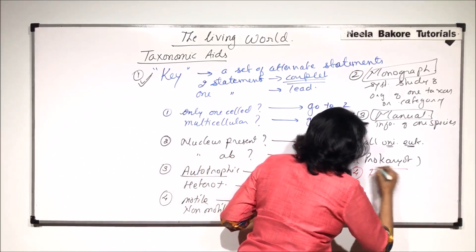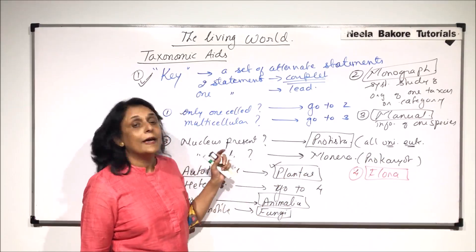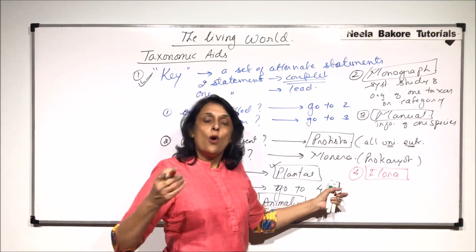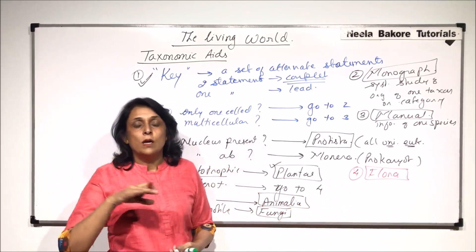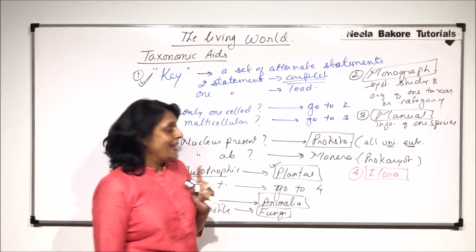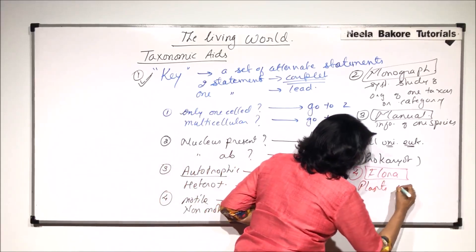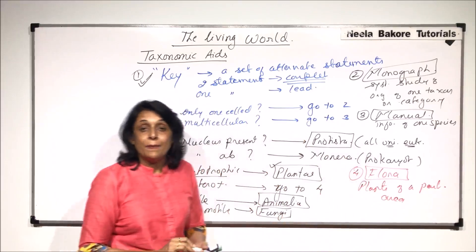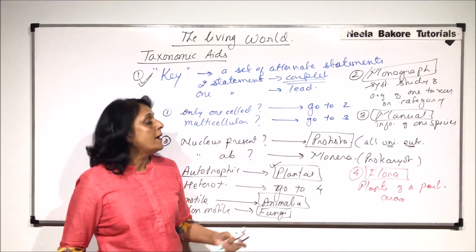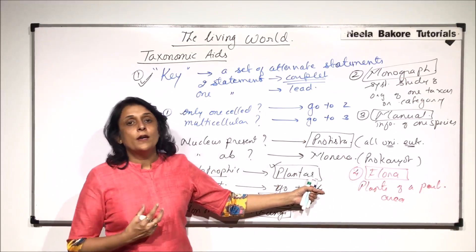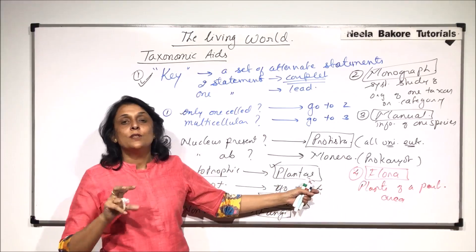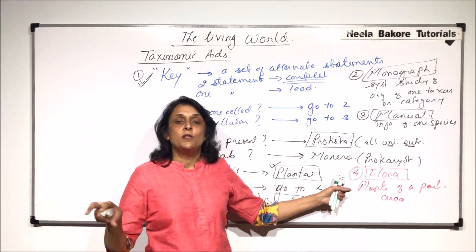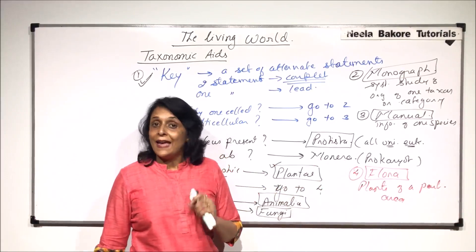The fourth taxonomic aid is called flora. Flora is also a taxonomic aid that helps us. Flora includes all the plants and those organisms which are there in a particular area — plants of a particular area. Flora and fauna are very common terms. Fauna refers to the animal species in a particular area, and flora refers to all those plant species or varieties which exist in a particular area.